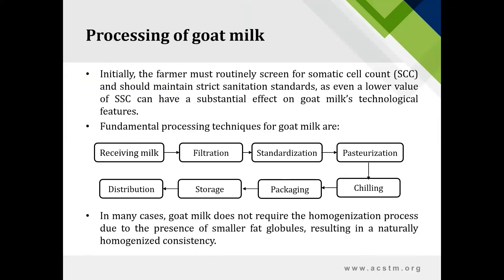Talking about the processing of goat milk, the most important initial step before processing is to check the somatic cell count. Goat milk has a naturally higher somatic cell count than cow milk; hence strict sanitation standards and routine screening should be followed to avoid higher somatic cell counts, as they can have a negative effect on technological features of goat milk. The fundamental steps are: receiving good quality milk, filtration to remove impurities, standardization of milk, pasteurization — which can be done by low temperature long time, high temperature short time, or ultra high temperature — then chilling, packaging, storage and distribution.